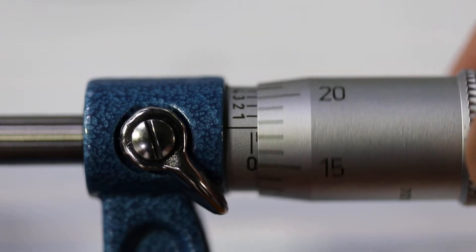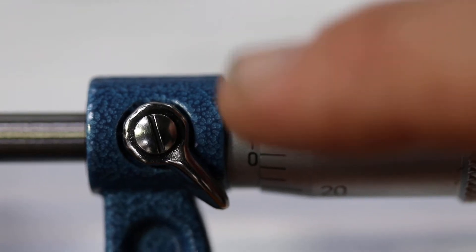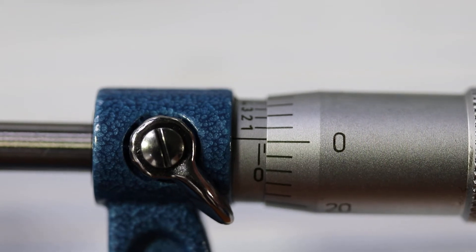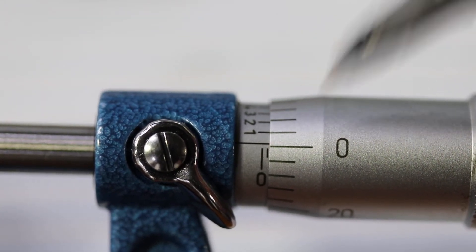Now if we turn this thimble a full turn, you will see it's on the second line right there. The thimble now is on that line, and on the zero.